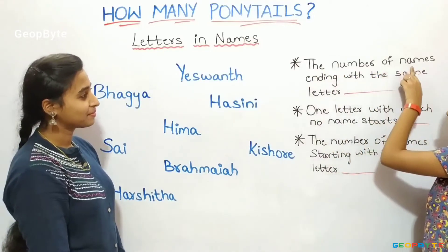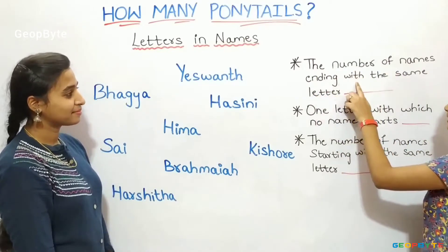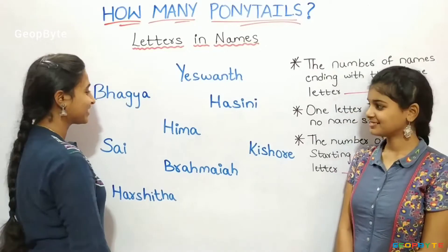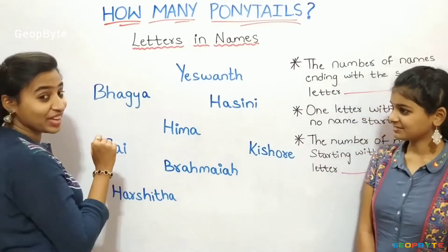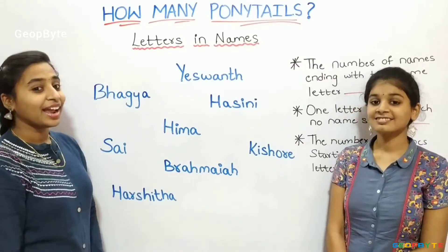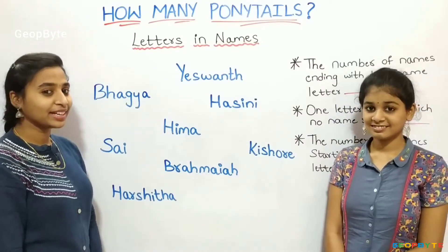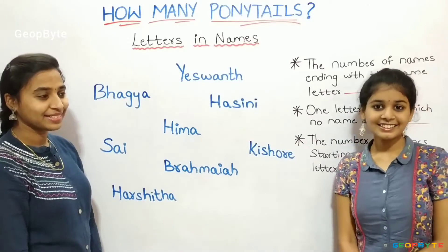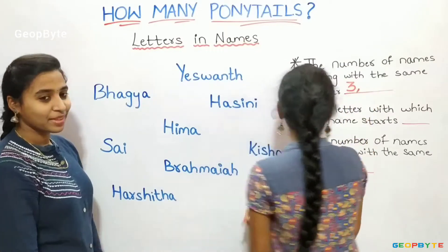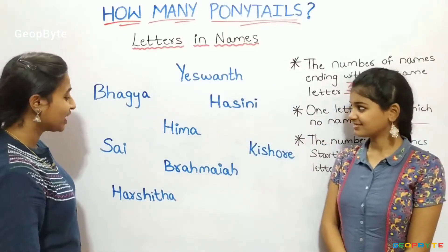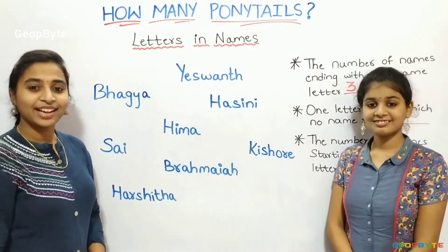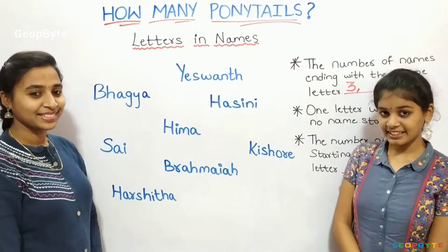The number of names ending with the same letter. Let us see, children. We have Bagya, Hima and Harshita ending with the same letter A — let us write 3. We also have Hasini and Sai ending with the letter I — let us write 2.